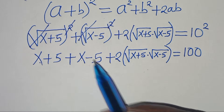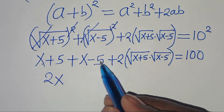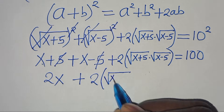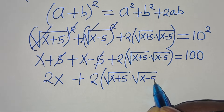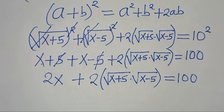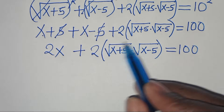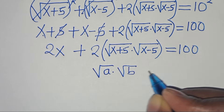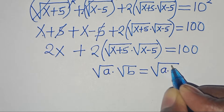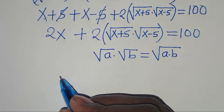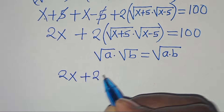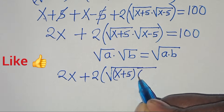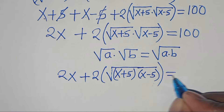Eliminating the square root signs, we get x+5 plus x−5, plus 2 times the square root of (x+5) times the square root of (x−5), equals 100. Since √a · √b = √(ab), we can write 2 times the square root of (x+5)(x−5), equals 100.